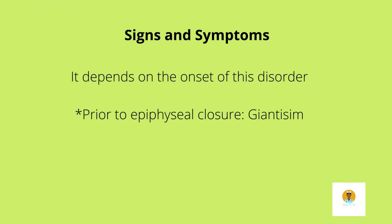Signs and symptoms will depend on when the onset of this disorder occurred. If we have growth hormone excess prior to epiphyseal closure, this can result in giantism, which is excessive height, and arthritis. If we have the onset of the growth hormone excess after the plate closure, it will result in acromegaly. Signs and symptoms of acromegaly include enlarged hands and feet, protruding jaw, kyphosis, arthritis, and a large larynx which will cause a deep hollow voice.